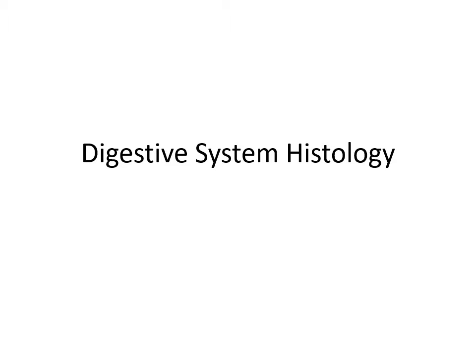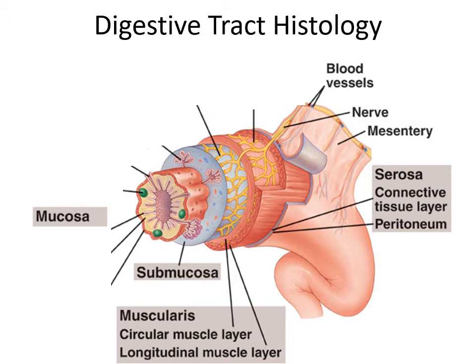Hi everyone, this is Dr. Hall and I'm going to go through some of the histology of the digestive system with you in this brief video. So first of all when we think about the digestive tract and when we think about the alimentary canal in general, remember it's this long continuous tube that starts in the pharynx and then ends at the anus, and there are several features that we're going to find in all different portions of this alimentary canal.